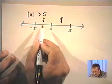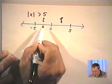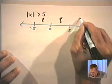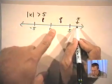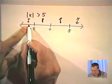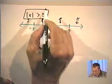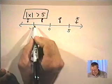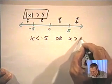Could x be in between 0 and negative 5? A number in that interval is less than 5 units away from 0. So x could not be in that interval either. That leaves this interval out here or this interval on the other side. If x is out in either of those regions, x is more than 5 units away from 0. So we can set up two inequalities: x can be less than negative 5 or x can be greater than 5.